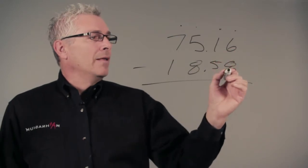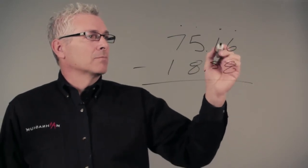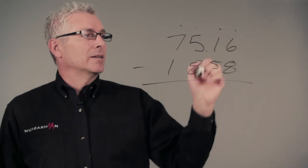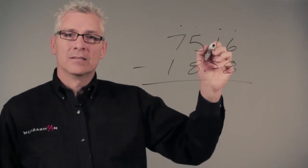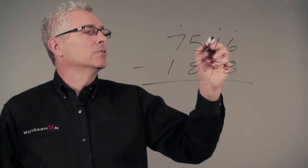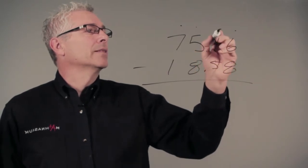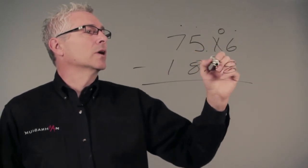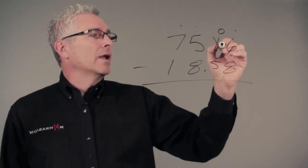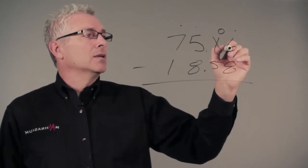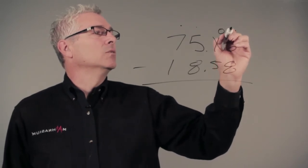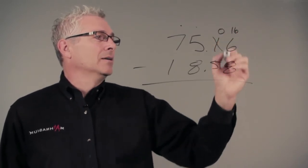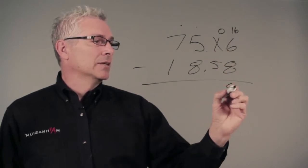So we have eight hundredths and six hundredths. Since we can't subtract eight from six, we're going to have to borrow from our tenths. And when we do that, we cross out our number and that becomes a zero when we subtract one. And then we're able to grab one tenth plus six one hundredths, which gives us sixteen one hundredths. And eight from sixteen is eight.